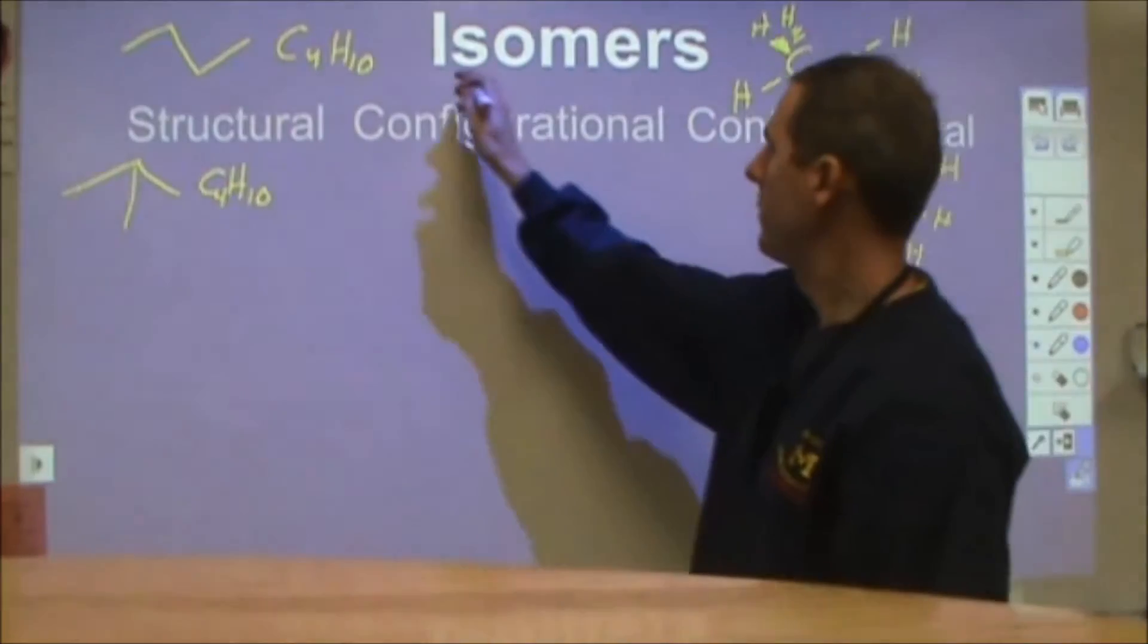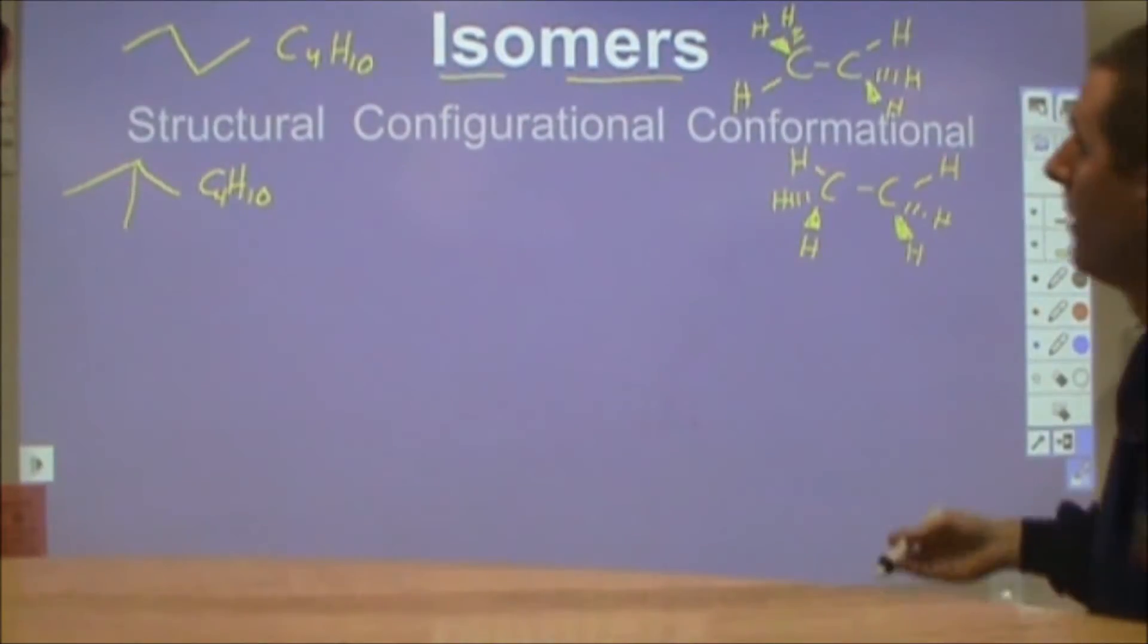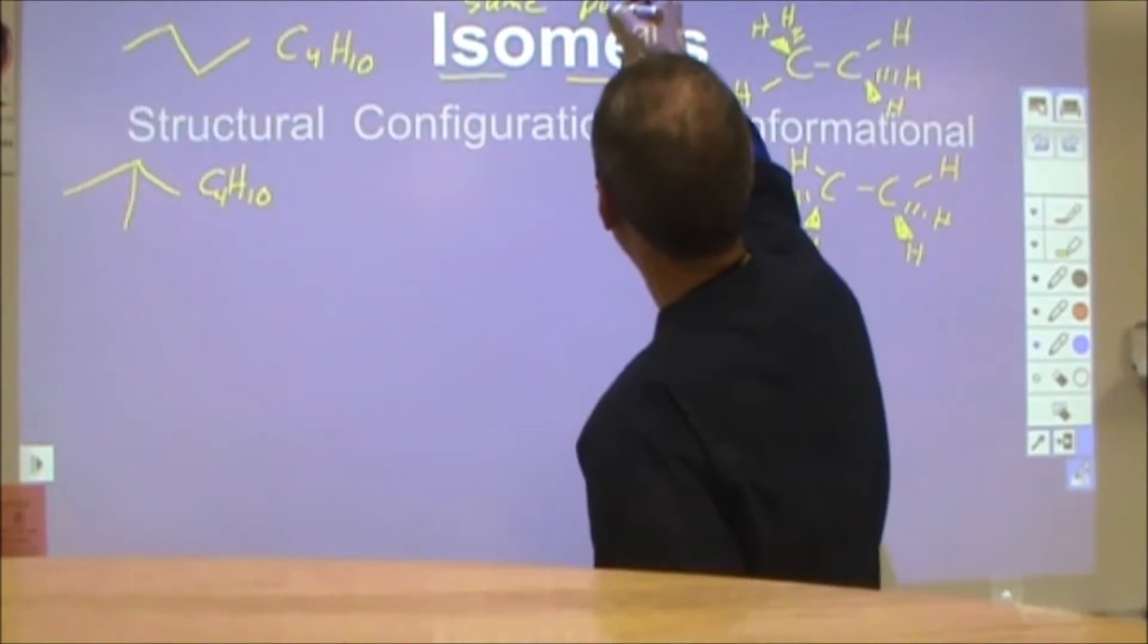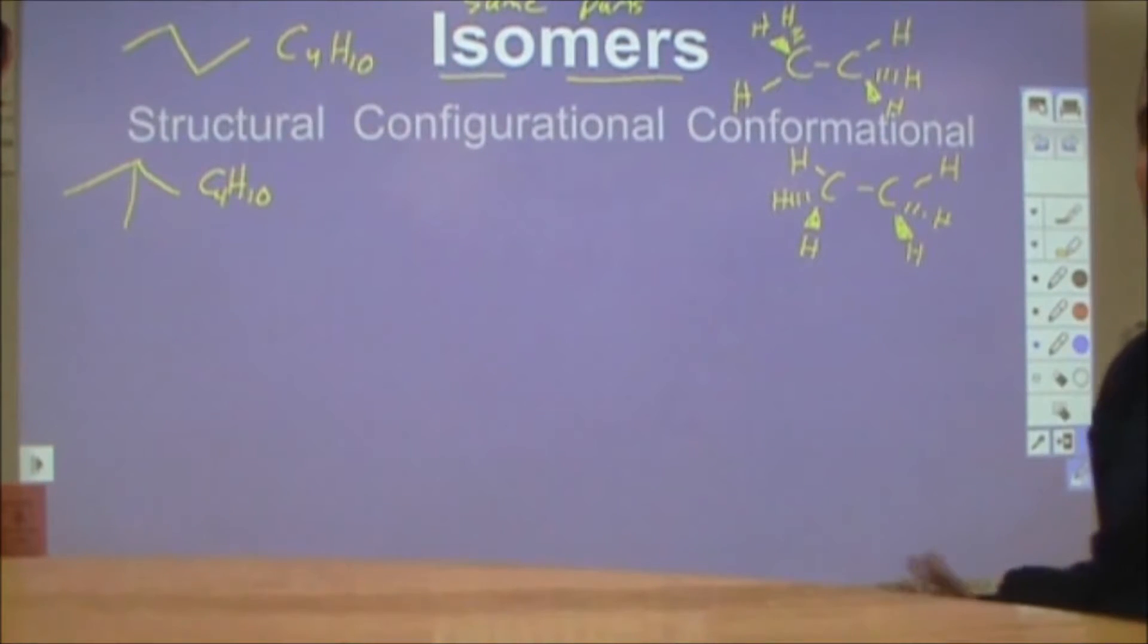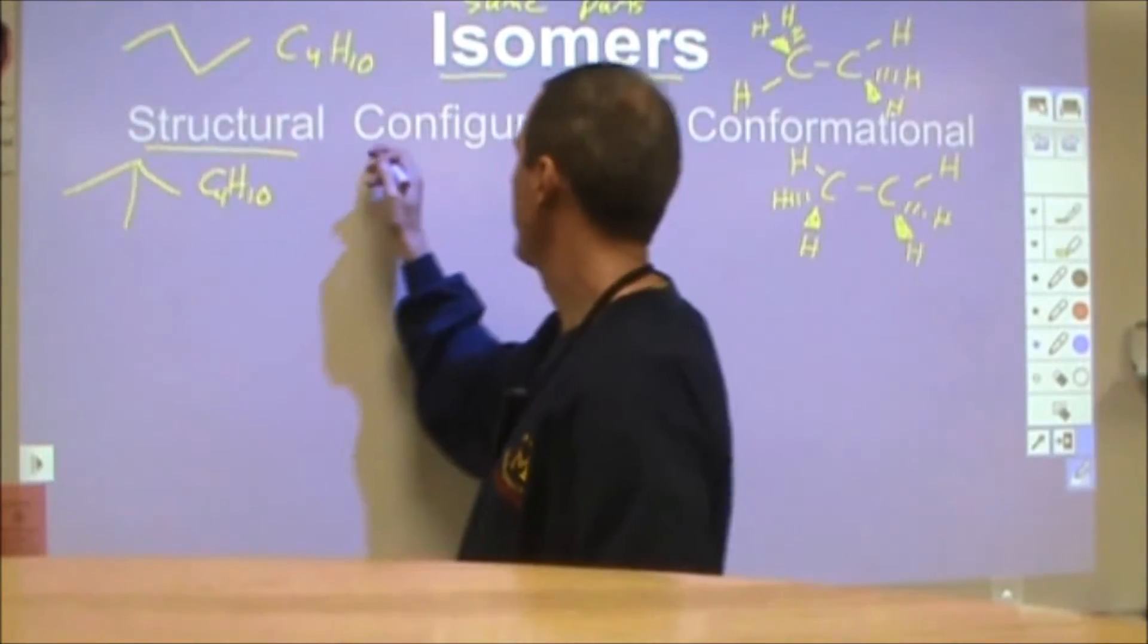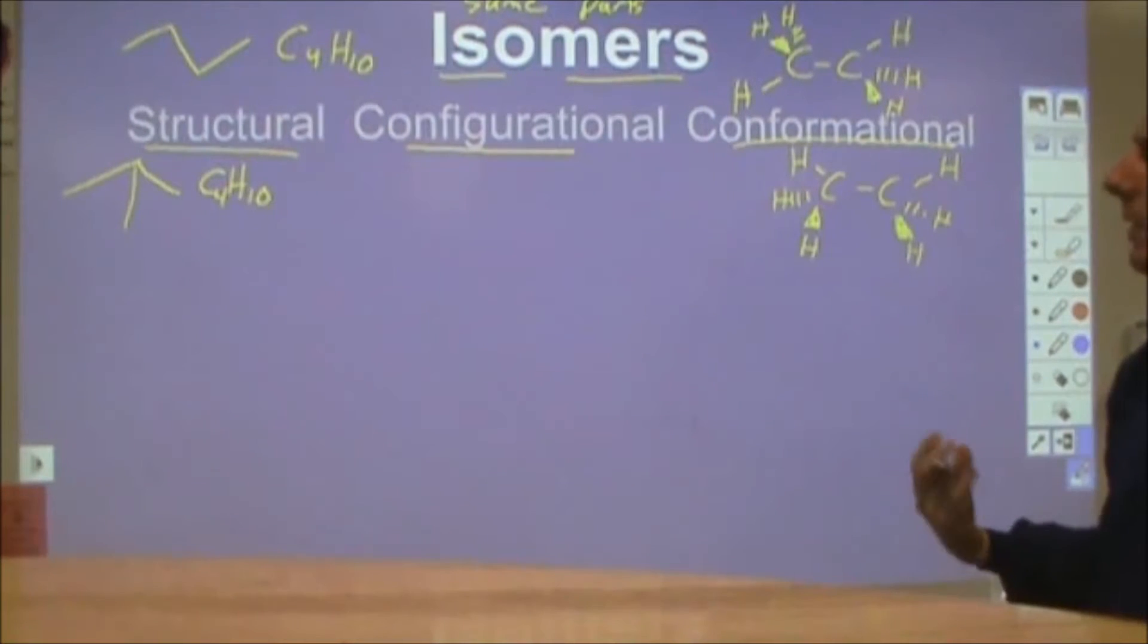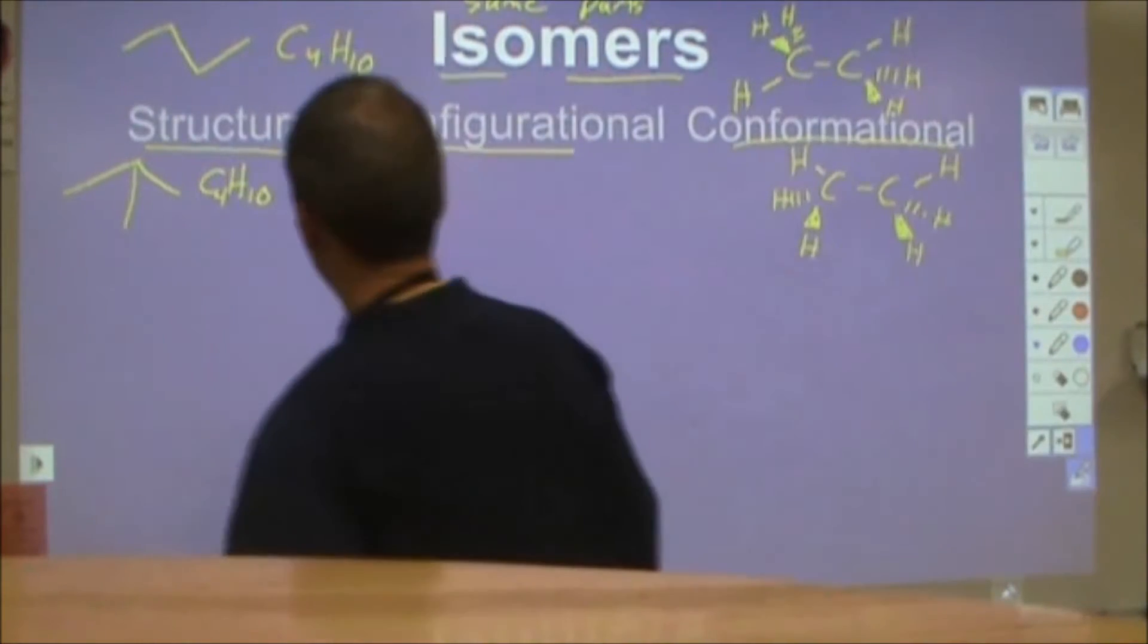Isomers is derived from two different words, iso and mers. Iso means same and mers means parts. So isomers are molecules or chemicals that are the same parts but arranged differently somehow. And in organic chemistry we distinguish between three different kinds: structural, configurational, and conformational.